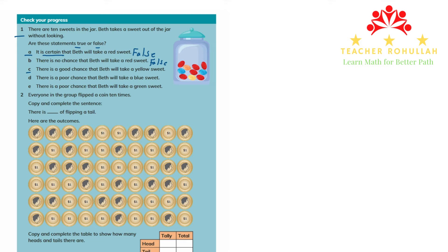Statement C says there is a good chance that Bet will take a yellow sweet. A good chance is about 80% sure. But here the outcome out of 10 sweets is only one yellow sweet, so it's not a good chance. We can say that this is also false.